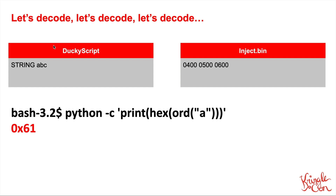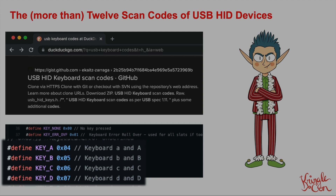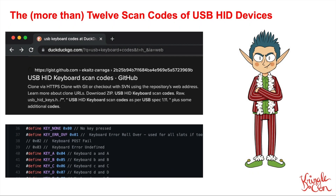I went onto the internet and found a list of USB HID scan codes. A fantastic GitHub gist has all the scan codes for USB. As you can see, the key A scan code is 0x04, key B is 0x05, key C is 0x06 — which matches exactly what we saw.